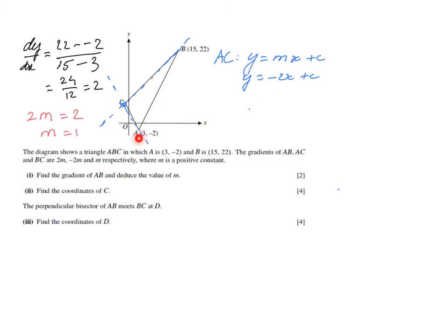Because I can substitute a point that I know that lies on AC. 3 minus 2. So minus 2 is minus 2 times 3 plus C. So C will be 4. And that gives me the equation AC. Y equals minus 2X plus 4. There we go. Let's put a box around that. Fantastic.